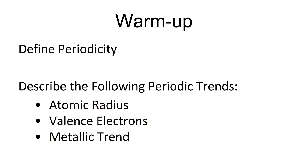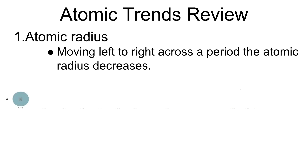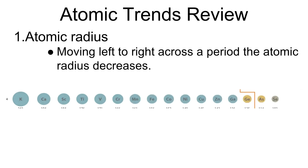Let's warm up with some of the periodic trends we've learned. The first atomic trend is atomic radius. As I move from left to right across the periodic table, the atomic radius — the size of the atom — is going to decrease. Looking at period 14 as an example, the element size starts pretty large and as we move across, it gets smaller and smaller. This happens in each period, which makes it a periodic trend.